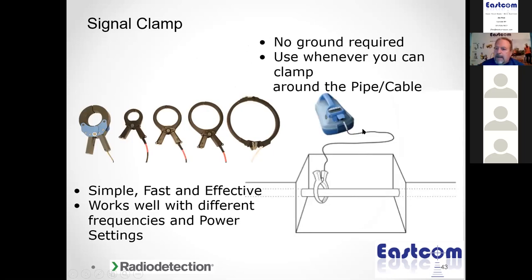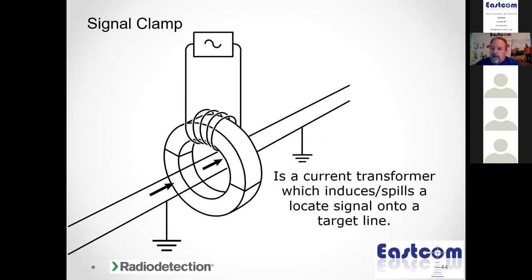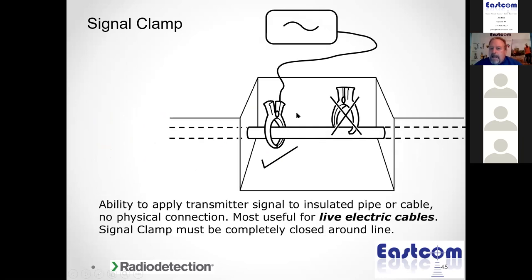Now let's talk about the inductive clamp. Clamps are used in the wire industries — cable, telephone, and electric. We can clamp around a conduit and it will induce current through that conduit into the wires inside. It's a simple, fast way to do a locate using an induction clamp. But clamps are tricky — they're generating current inside themselves and inducing that current into the pipe or cable. The clamp gives us the best signal when we clamp fully around the utility.